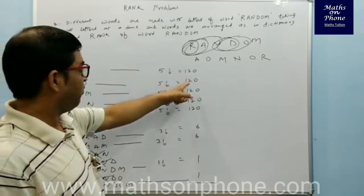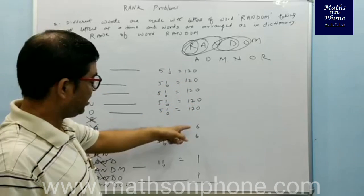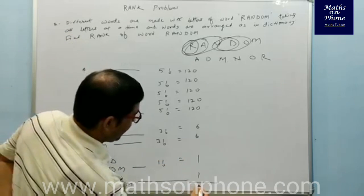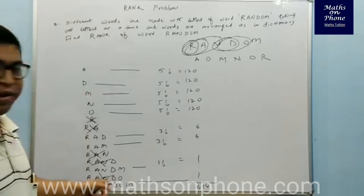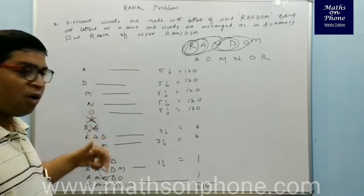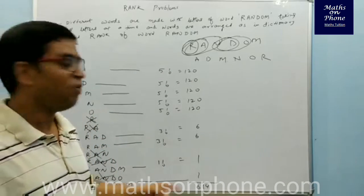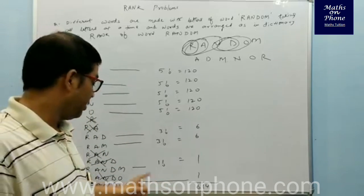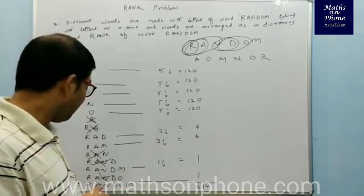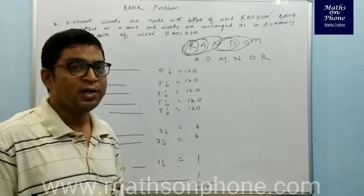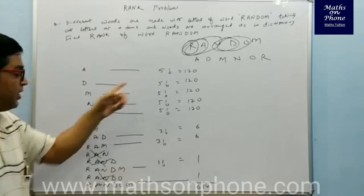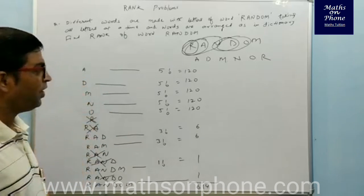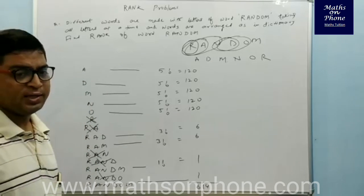Now sum up: 120 + 120 + 120 + 120 = 480 (words before R), then 6 + 6 = 12 (for RAD and RAM), then 1 (for RANDM), giving 480 + 12 + 1 = 493... the rank of the word RANDOM comes out to be 614. Just follow this technique: whenever the actual letter comes, cancel it and start from the next. This technique will make finding the rank very easy.